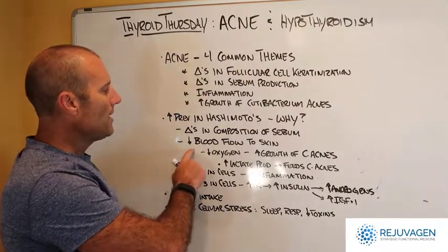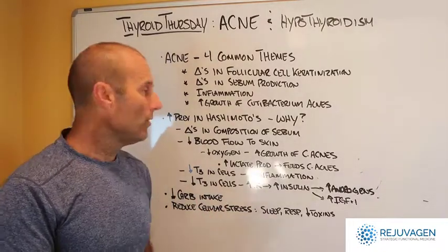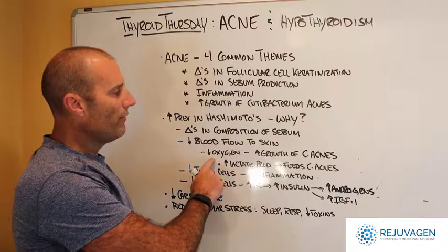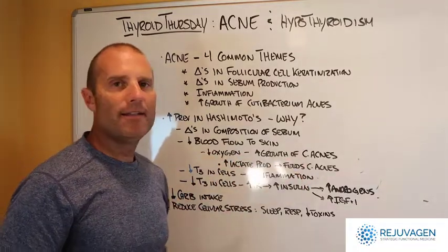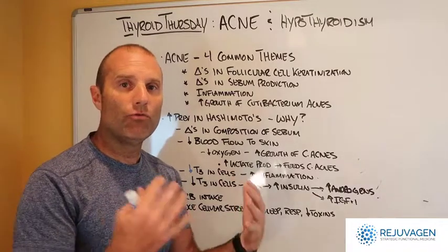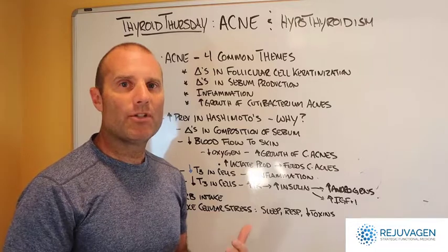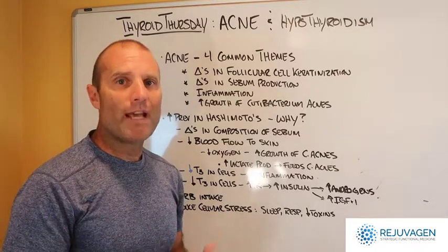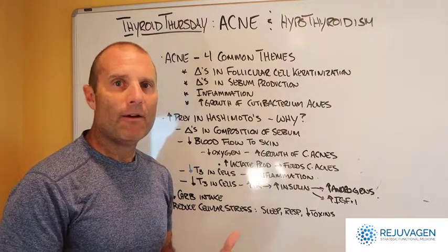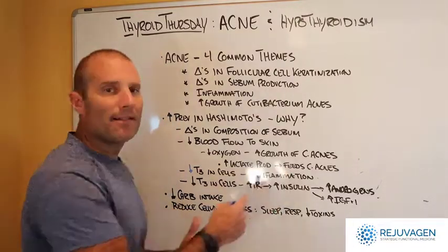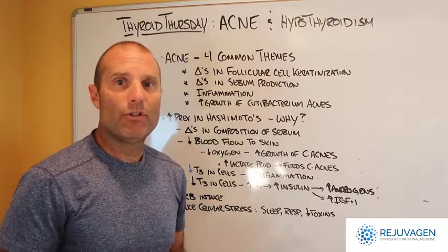When you have a hypothyroid state, you have decreased blood flow to those tissues. That's important because when you have decreased blood flow, you have decreased oxygen. The C-acnes is a facultative anaerobe, which means it can live in a low oxygen state. When you have cells that are in a low oxygen state, we don't utilize glucose as efficiently as we should, and we have an increased production of lactate or lactic acid. The C-acnes can actually feed on lactic acid, which may allow it to overgrow.